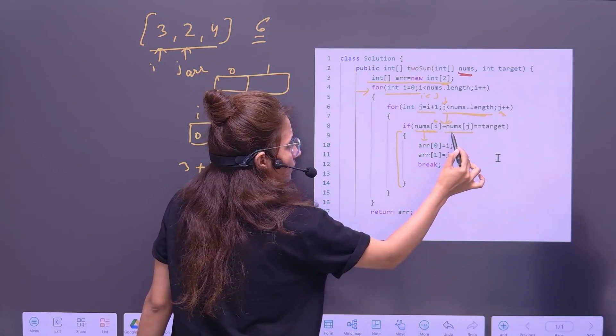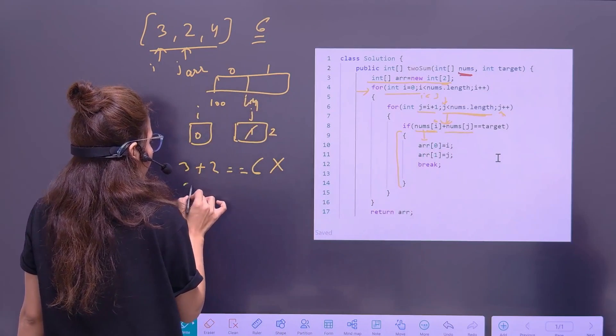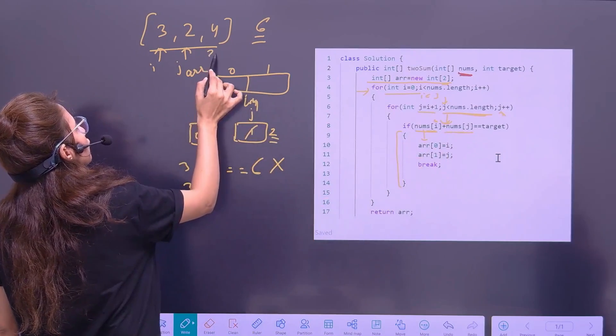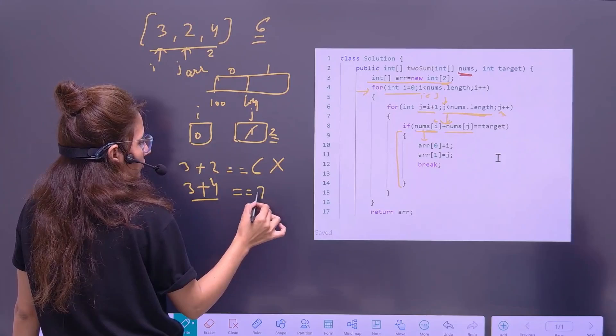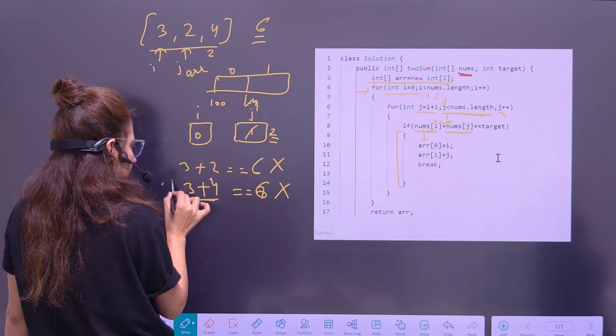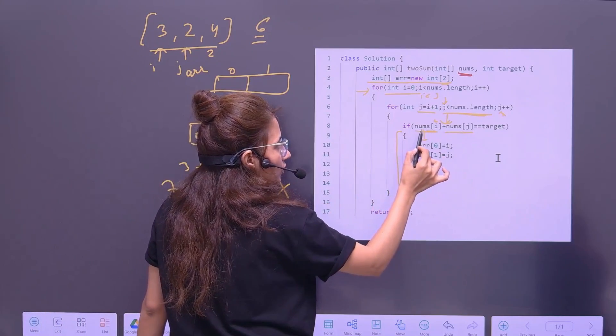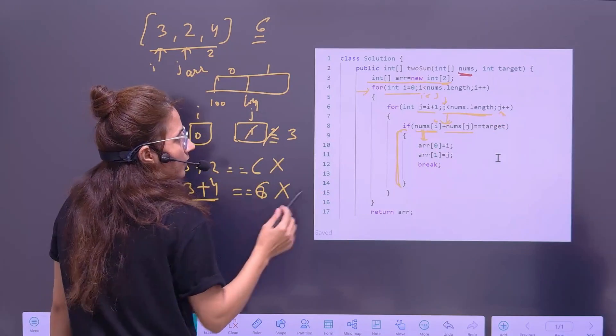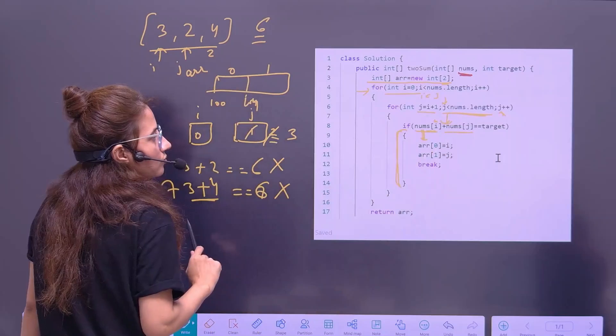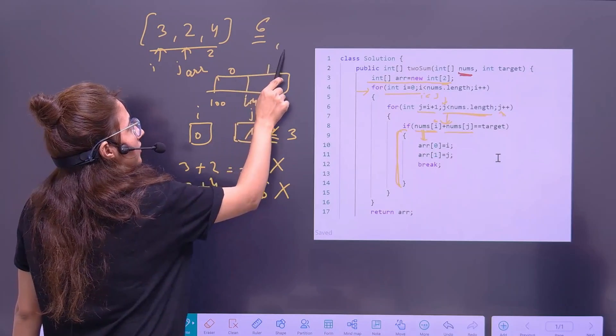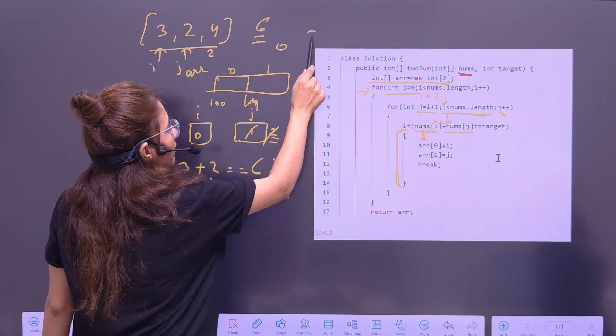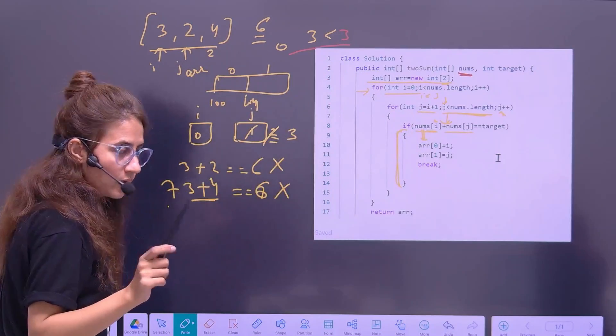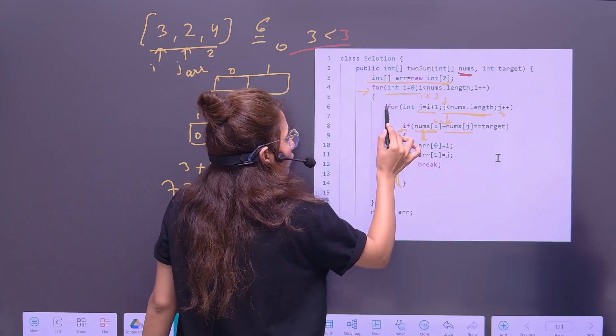Is it 6? No. Condition is not true. So we will not enter here. The control will not enter within this if block. Now control will go to here. And j plus plus. Now j becomes 2. Is this condition true? Yes condition true. Again enter here. Now num of i is still 3. Plus num of j. J is now 2. So 4. 3 plus 4 is equal to is equal to 6. No. Because it is 7. So again the condition is not true. So control will not enter here in this if block and j plus plus. Now j becomes 3. Is this condition still true? Condition is not true. Because j is 3 less than nums dot length is also 3. Is it less than 3? No.